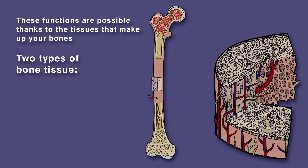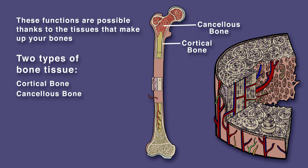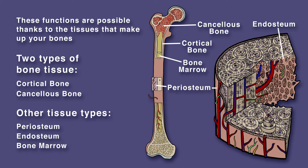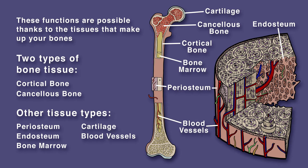There are two types of bone tissue: cortical bone and cancellous bone. Bones also feature other tissue types, including periosteum, endosteum, bone marrow, cartilage, blood vessels, and nerves.